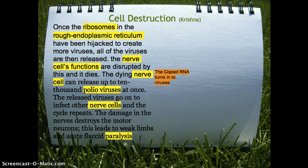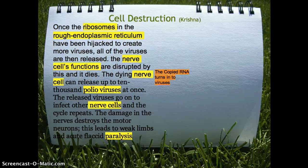So, once the ribosomes in the rough endoplasmic reticulum have been hijacked to create more viruses, all of the viruses are then released. The nerve cell's functions are disrupted by that, and it dies. The dying nerve cell can release up to 10,000 polio viruses at once. The released viruses go on to infect other nerve cells, and the cycle repeats. The damage in the nerve cells destroys your motor neurons and leads to weak limbs and acute flaccid paralysis.